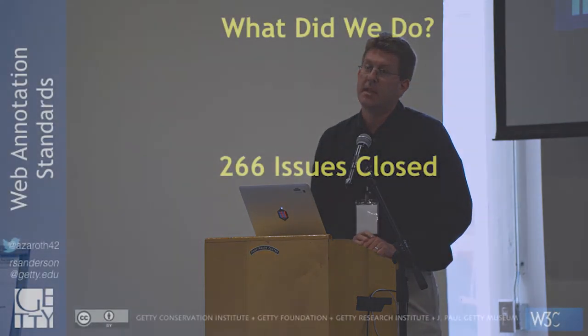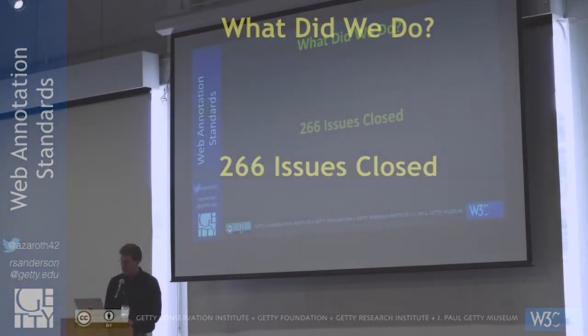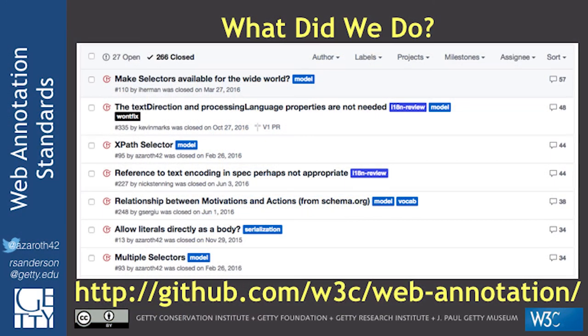We used GitHub for managing the process and publishing the content. We tracked all our topics, criticisms, and suggestions as GitHub issues and got through 266 of them. If you go to the GitHub W3C repository, you'll be able to see everything that we did. We took the very conscious and deliberate choice to do everything in public, which worked really well and was important for community demand.